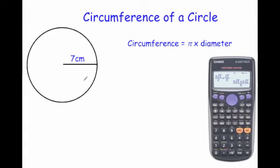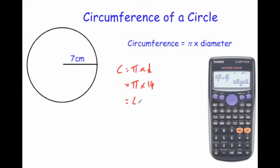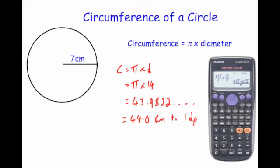Let's have a look at another question. Here we've got a circle where the radius is 7. Using circumference equals pi times diameter — because the radius is 7, the diameter is 14 — so we do pi times 14. Pressing shift then the centre button for pi, pi times 14 gives 43.9822, which rounds to 44.0 centimetres to one decimal place.